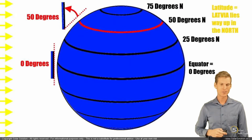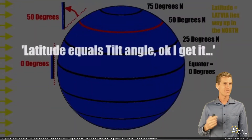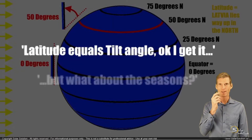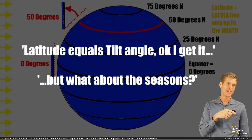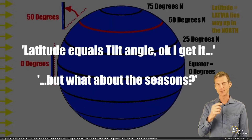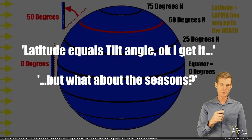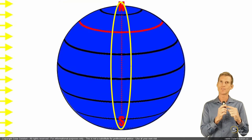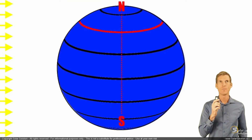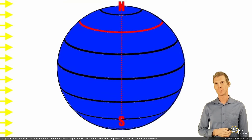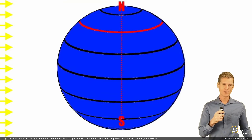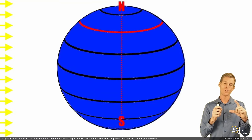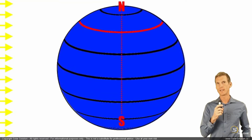The optimum solar tilt angle is identical to your latitude — but what about the seasons? During the seasons, the sun can be higher or lower in the sky. The situation I just explained, whereby the axis of the planet is perpendicular to the sun, only occurs during the absolute equinoxes — once during spring and once during fall. During those times, if you place your solar module at an angle identical to your latitude, your panel would be perpendicular to the sun rays.